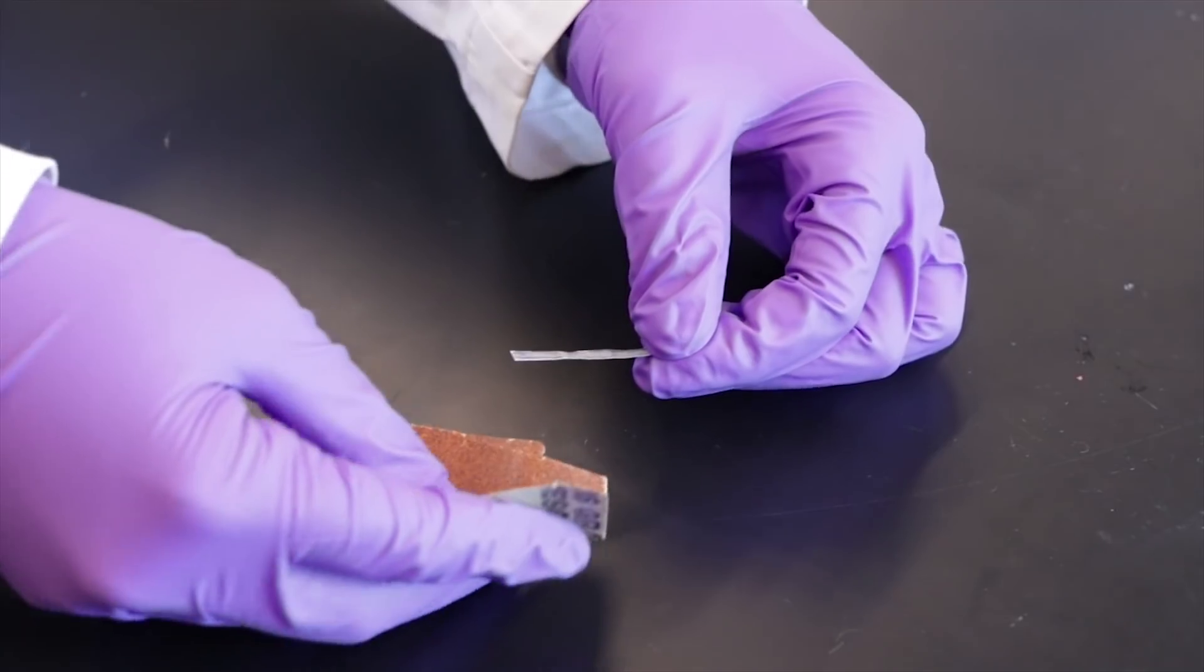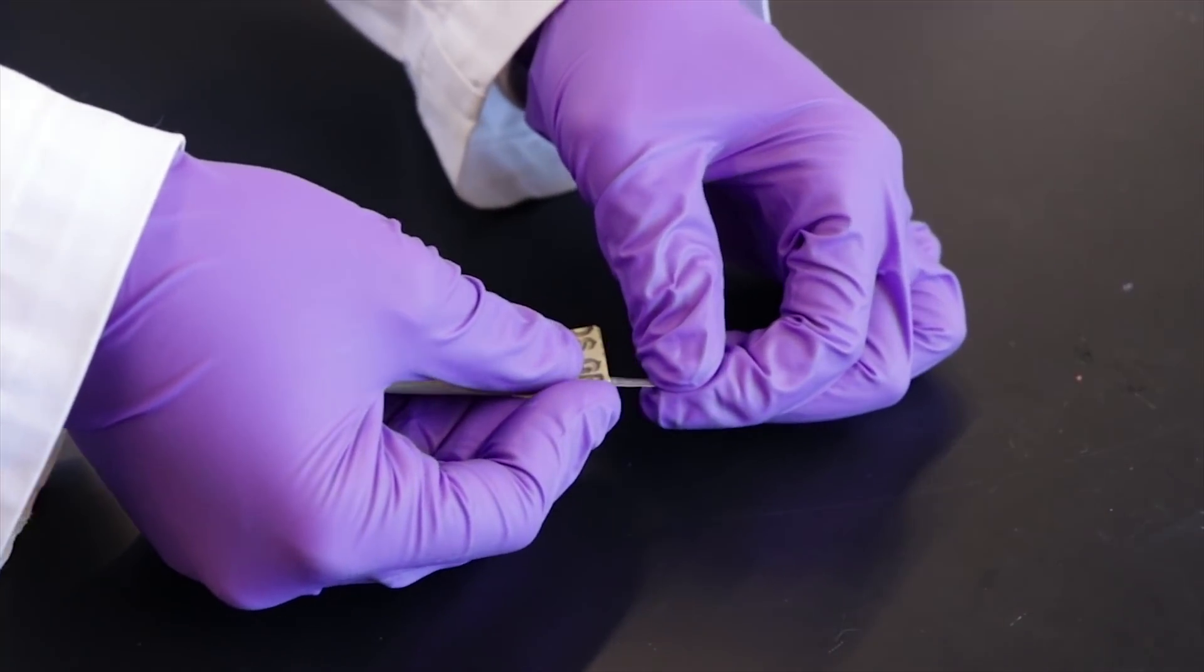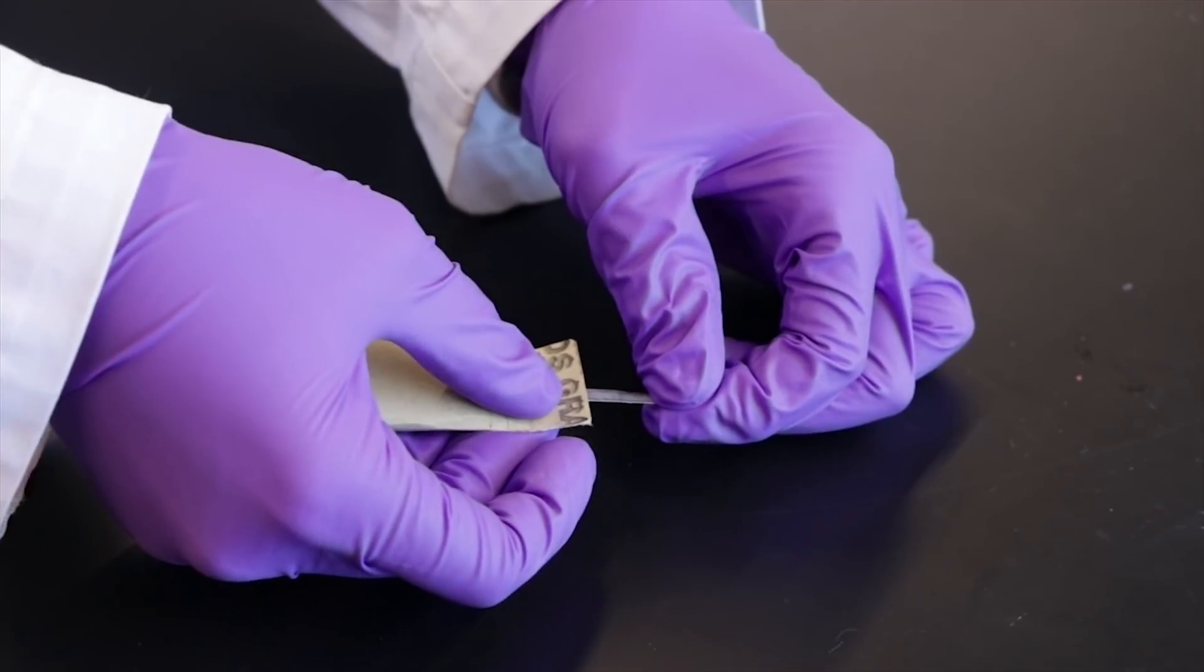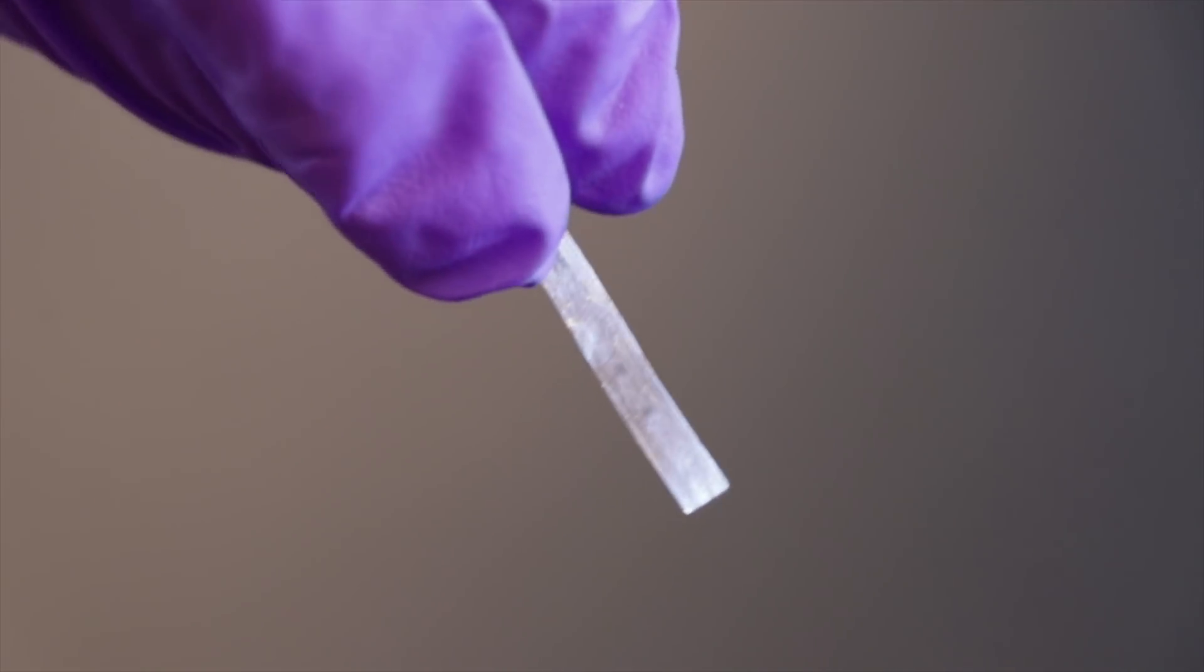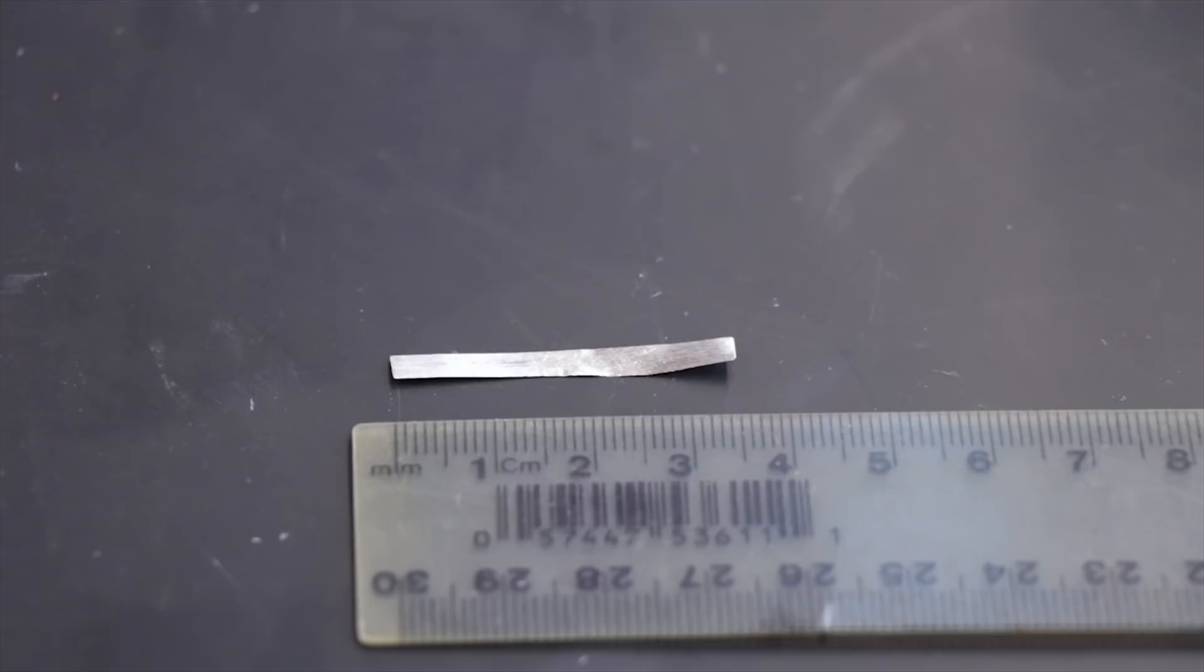For this experiment you will need to cut out a piece of magnesium ribbon of the appropriate length as determined by your pre-lab calculations. Sand the ribbon gently to get rid of the oxidized layer. Once all the outer coating is sanded off, cut the ribbon to the desired length.